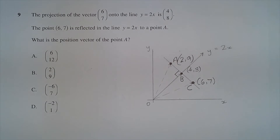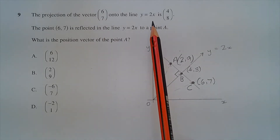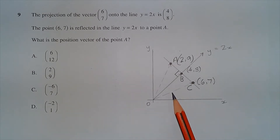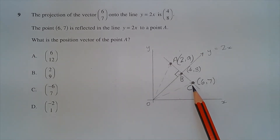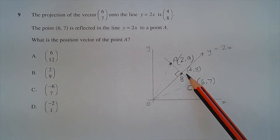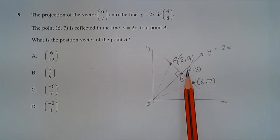This question may be answered geometrically. Let OC represent the vector 6i plus 7j, projected onto the line y equals 2x such that the projection is the vector 4i plus 8j. Looking at it from the point of view of coordinate geometry, the end point of vector OC has coordinates 6 comma 7, and the end point of vector OB, which is the projection of OC onto the line y equals 2x, has coordinates 4 comma 8.